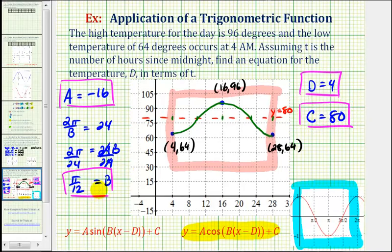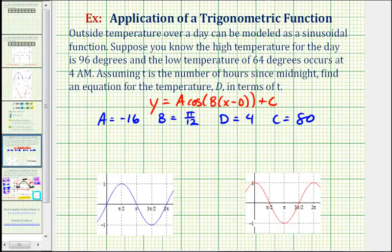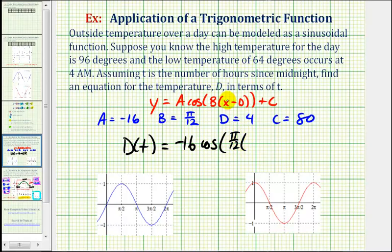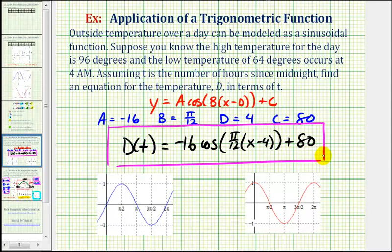Now that we have the values of a, b, d, and c, we can write the equation of our cosine function. Remember our function is d in terms of t, so we have D(t) equals negative 16 times cosine of b, which is pi divided by 12 times the quantity x minus d, so it's x minus four, and then plus 80. This would be a sinusoidal function that we can use to model the temperature over the 24 hour period. I hope you found this explanation helpful.